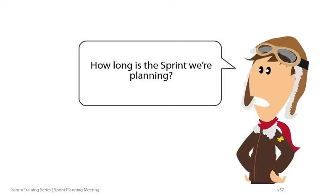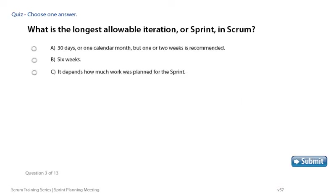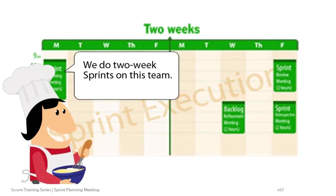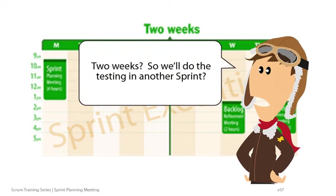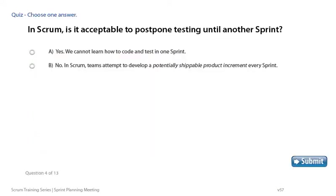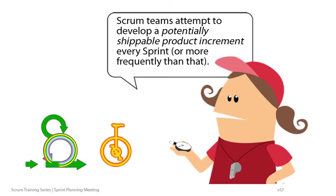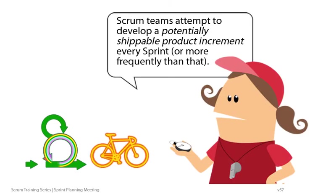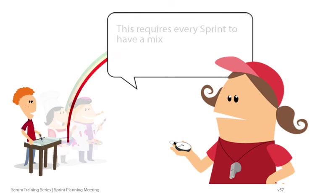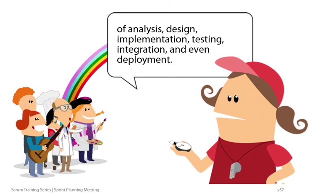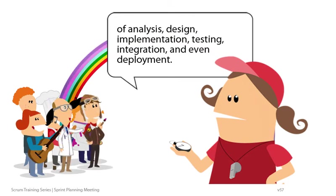How long is the Sprint we're planning? We do two-week Sprints on this team. Two weeks? So we'll do the testing in another Sprint. Scrum teams attempt to develop a potentially shippable product increment every Sprint, or more frequently than that. This requires every Sprint to have a mix of analysis, design, implementation, testing, integration, and even deployment.